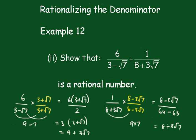So when you add those two together, these will go out and you get the answer, which is 9 plus 8 is 17, which is, of course, a rational number.